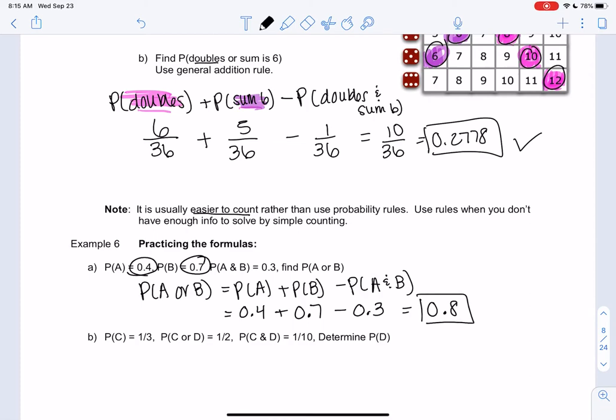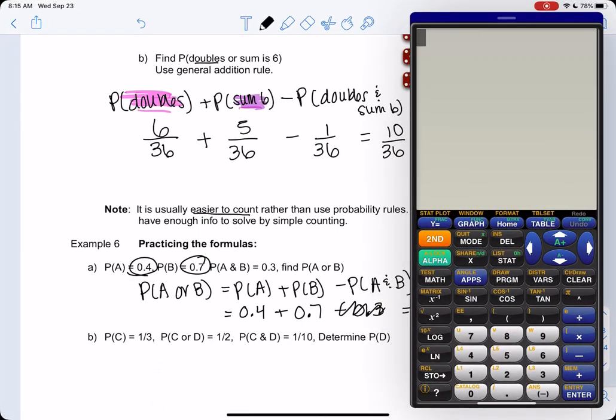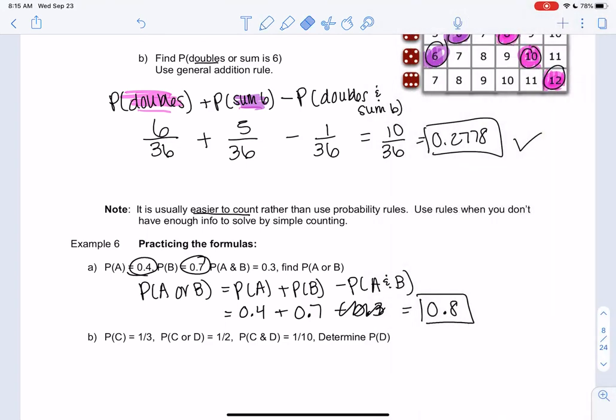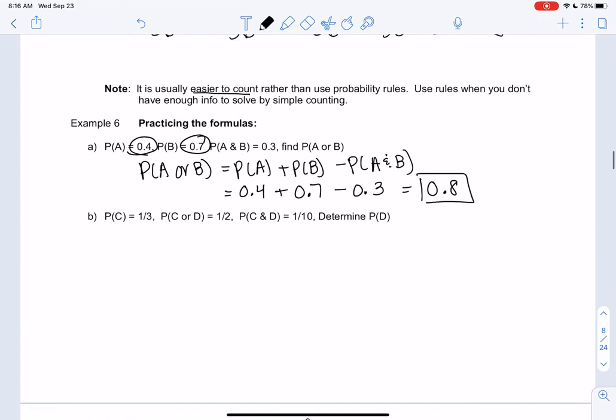A good way to check your work is if you didn't subtract the overlap and you do 0.4 plus 0.7, you get 1.1. And remember, probabilities are never bigger than 1. So that's a big hint that something's wrong. And so we take away the overlap and we get 0.8. So probabilities, again, are never bigger than 1. If they're bigger than 1, you're doing something wrong.